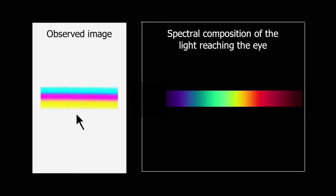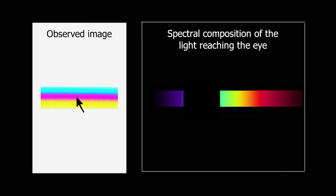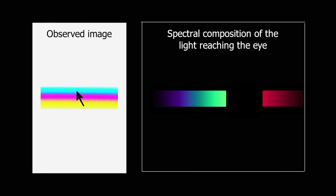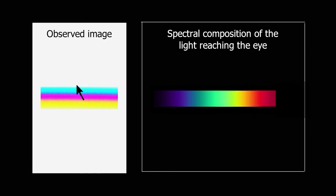When it comes to the spectral image with purple in the center, the modulation rather consists in cutting away a part in the middle of the full spectrum — a part that can be more or less wide, resulting in purples of various lightness and saturation. The complementary light, given by the darkened area in the middle of the full spectrum, turns out as variants of green.